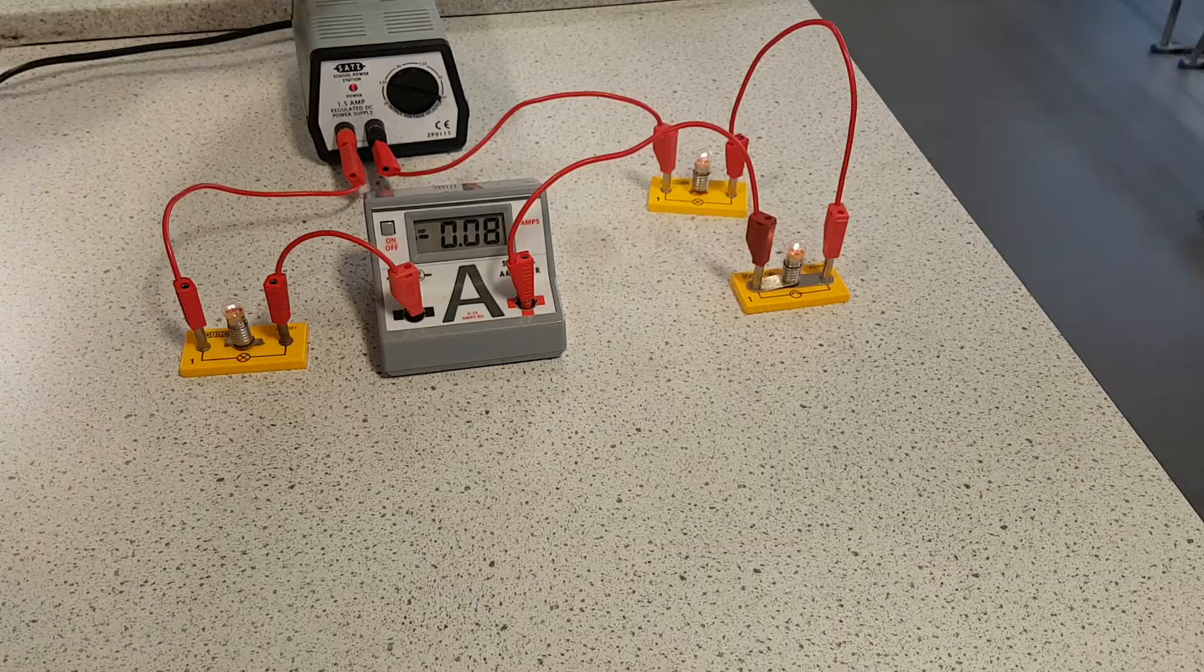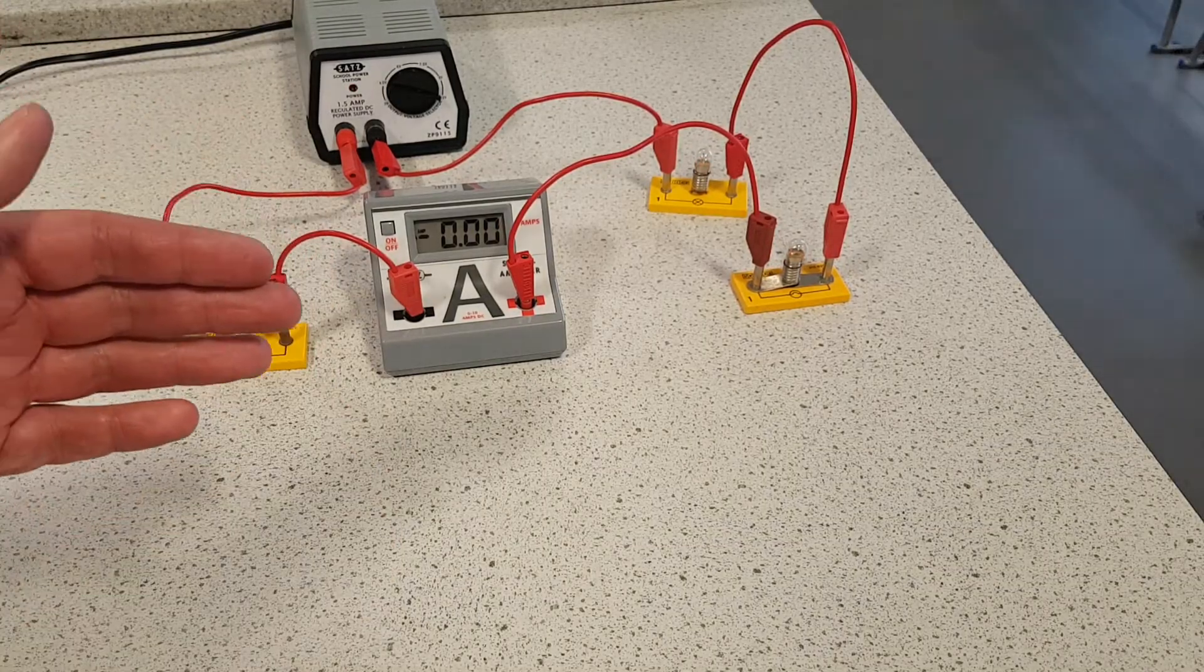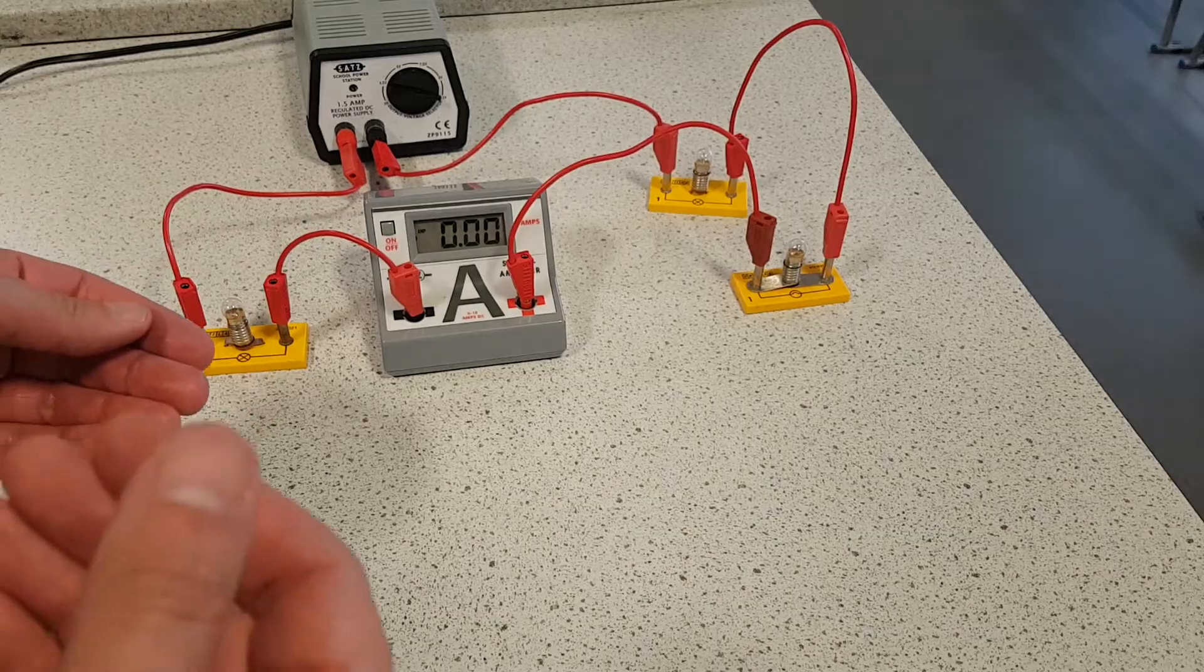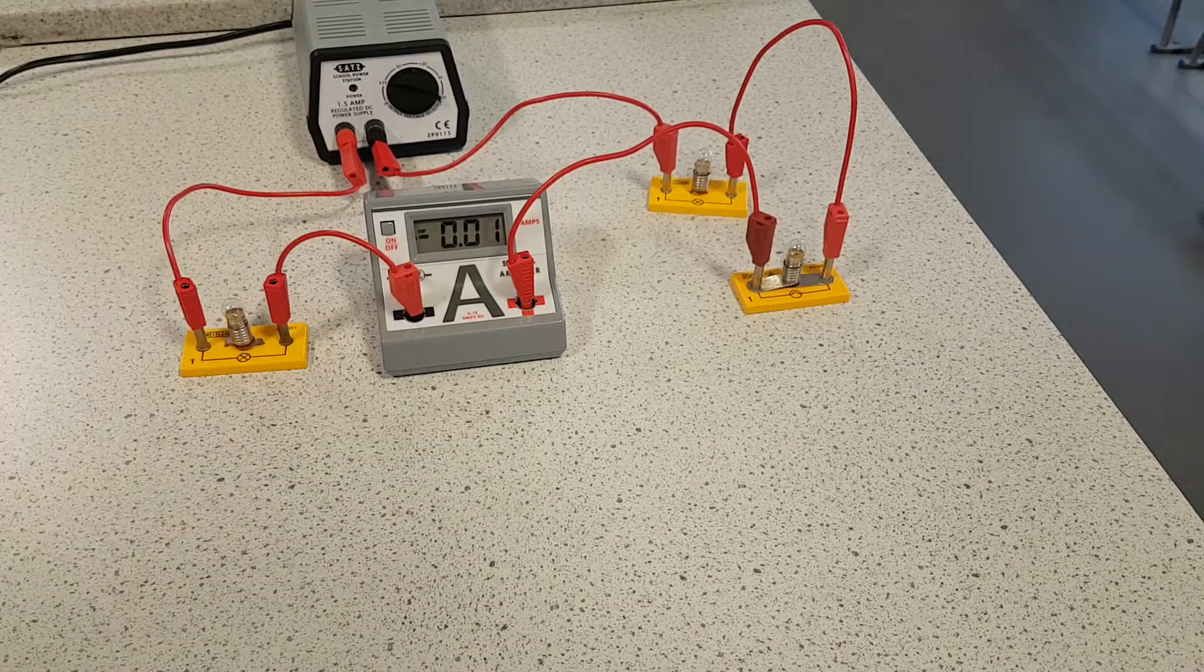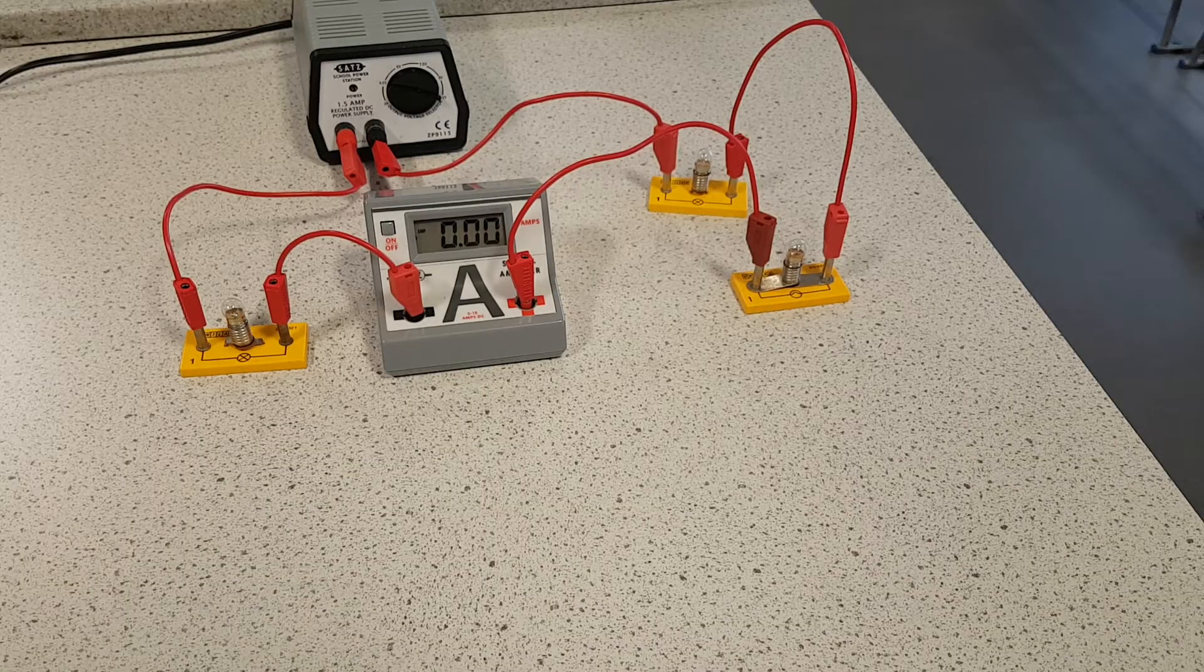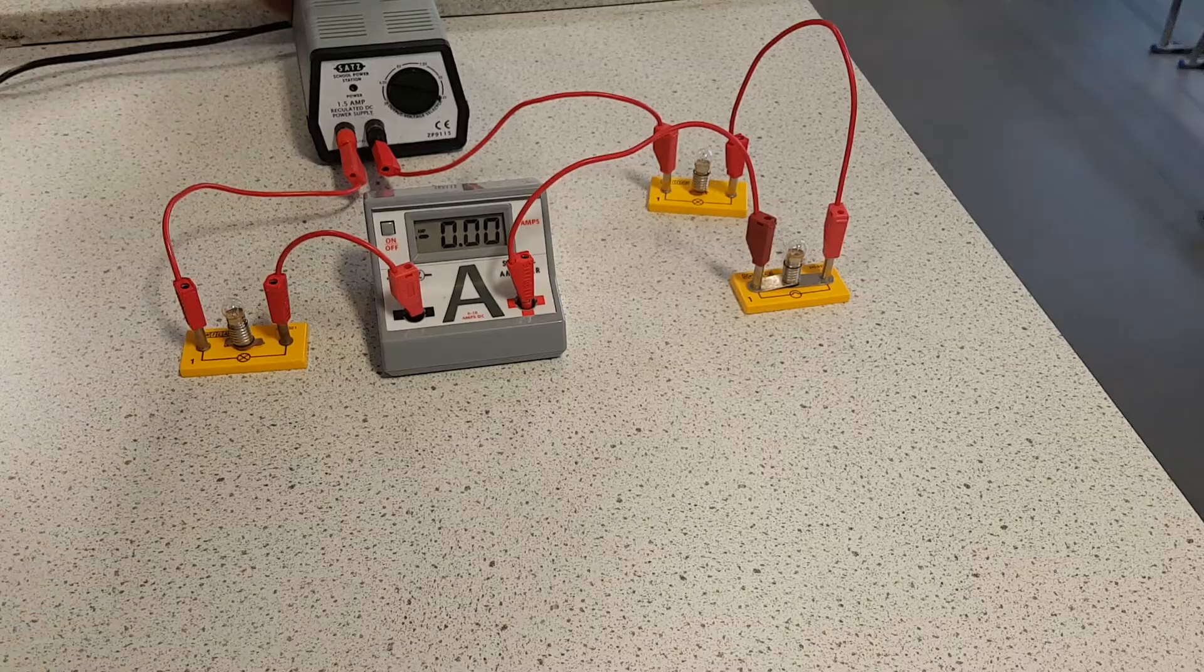Remember, we'll have a look now at the parallel. And just remember how that went. When we added more of them, when we added more bulbs into parallel circuits, remember they didn't get dimmer. What do you think is going to happen to the current as we add more bulbs in parallel?